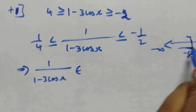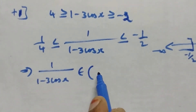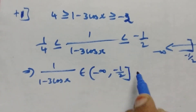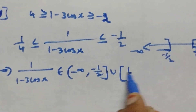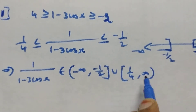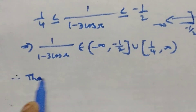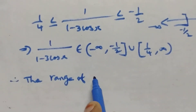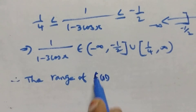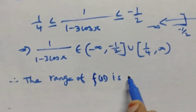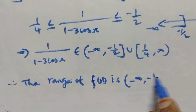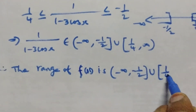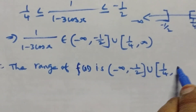Therefore, the range of f(x) is the union of the interval (-∞, -1/2] union [1/4, +∞). That is, open-closed interval minus infinity to -1/2, union closed-open interval 1/4 to plus infinity.